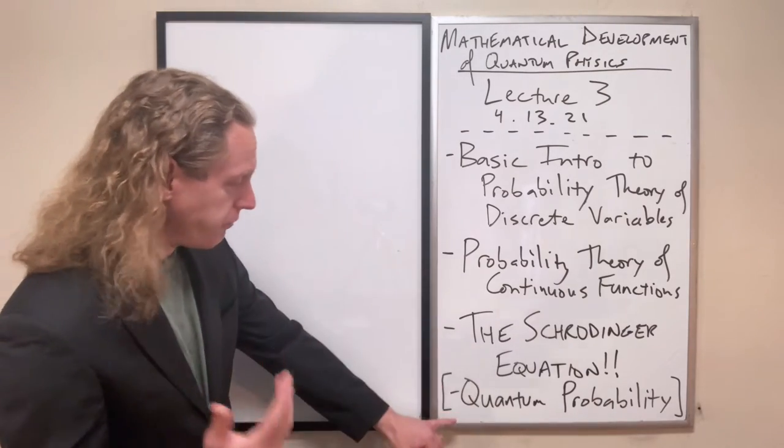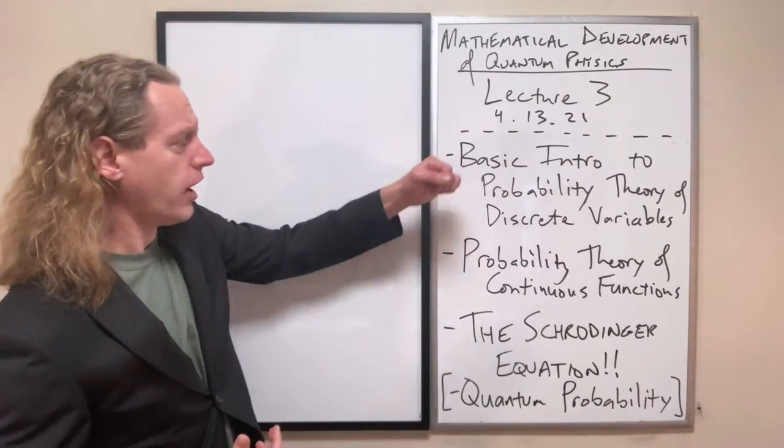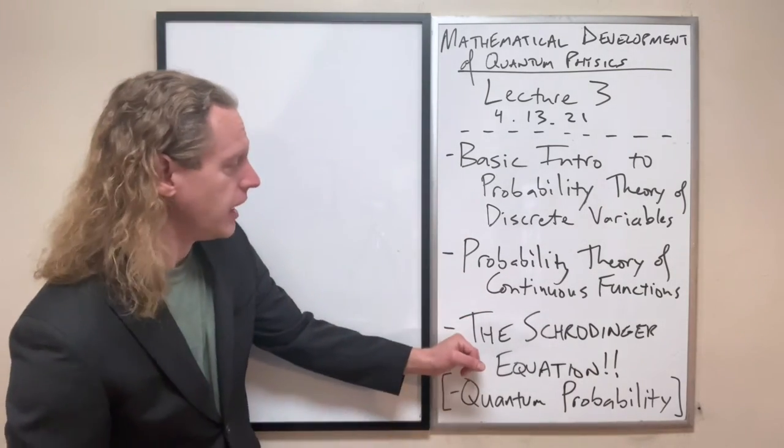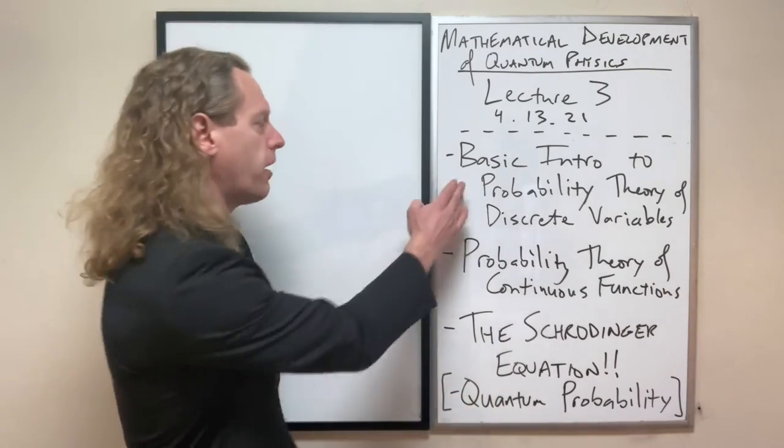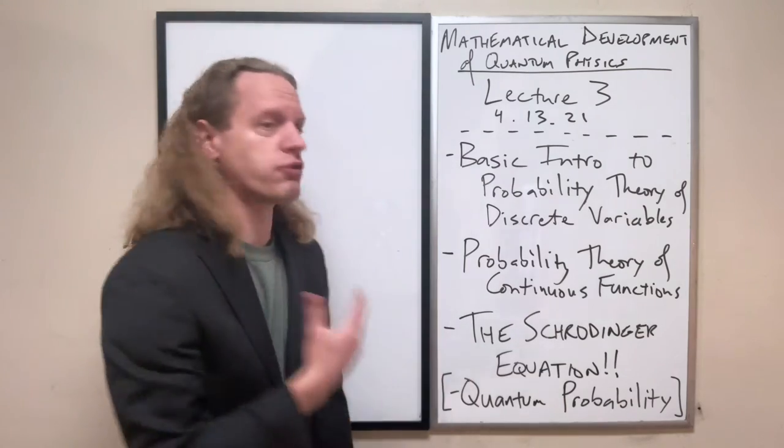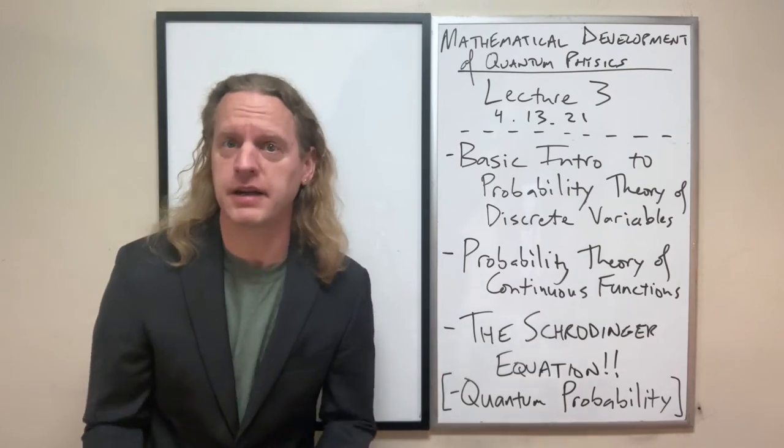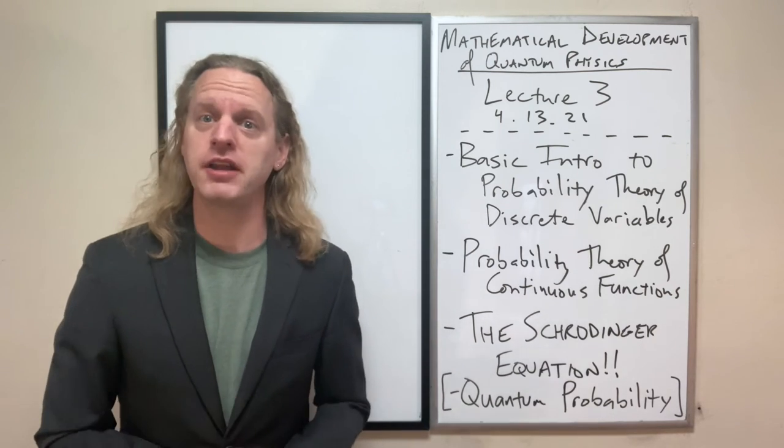And then finally, if we have time, I do want to describe at least, so we're covering probability, we're introducing this, and then I want to at least basically explain how the probabilities that we're describing there actually apply to the Schrödinger equation, which is the way that we predict outcomes in a quantum setting. So this is where the fun really begins.